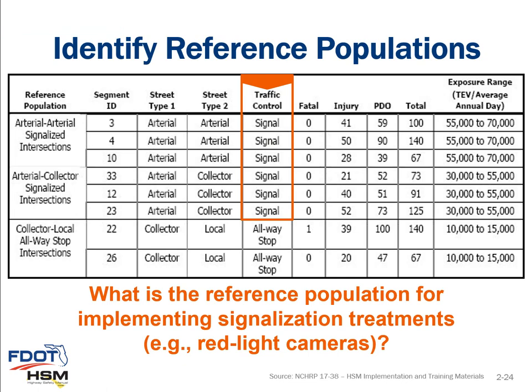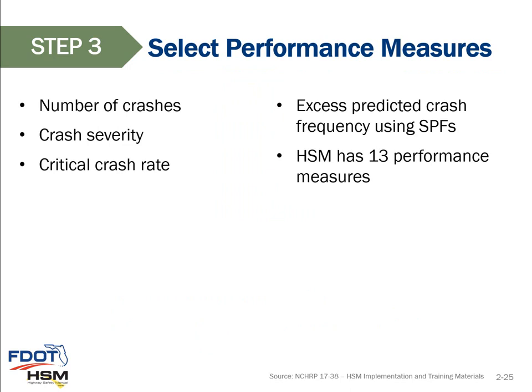Step 3 is to select performance measures, evaluating the potential to reduce crashes or crash severity. Just as intersection traffic operations can be measured using vehicle delay, queue length, or volume-to-capacity ratio, intersection safety can be quantifiably measured in terms of expected crash frequency, expected crash severity, critical crash rate, and more. The Highway Safety Manual includes 13 different performance measures, which we'll discuss in a few minutes.